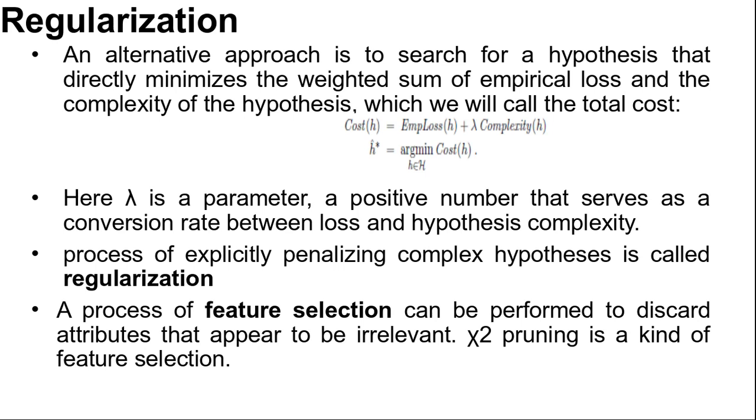It is in fact possible to have the empirical loss and the complexity measured on the same scale without the conversion factor lambda. They can both be measured in bits. First encode the hypothesis as a Turing machine program and count the number of bits. Then count the number of bits required to encode the data, where a correctly predicted example costs zero bits and the cost of an incorrectly predicted example depends on how large the error is. Minimum description length, or in short MDL, hypothesis minimizes the total number of bits required. This works well in the limit, but for smaller problems there is a difficulty in that the choice of encoding for the program, for example how best to encode a decision tree as a bit string, affects the outcomes.